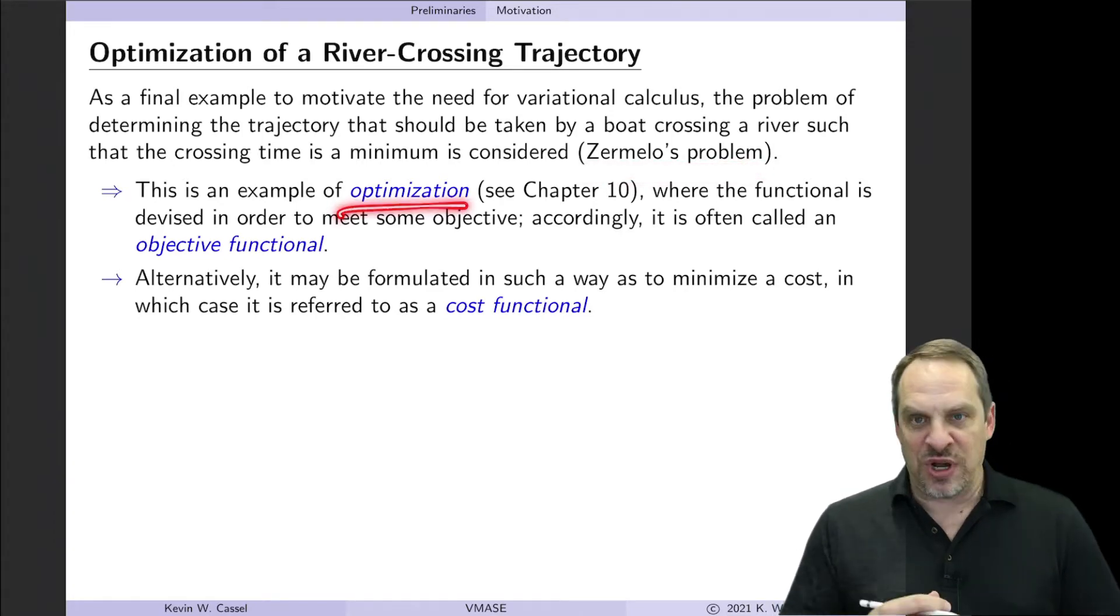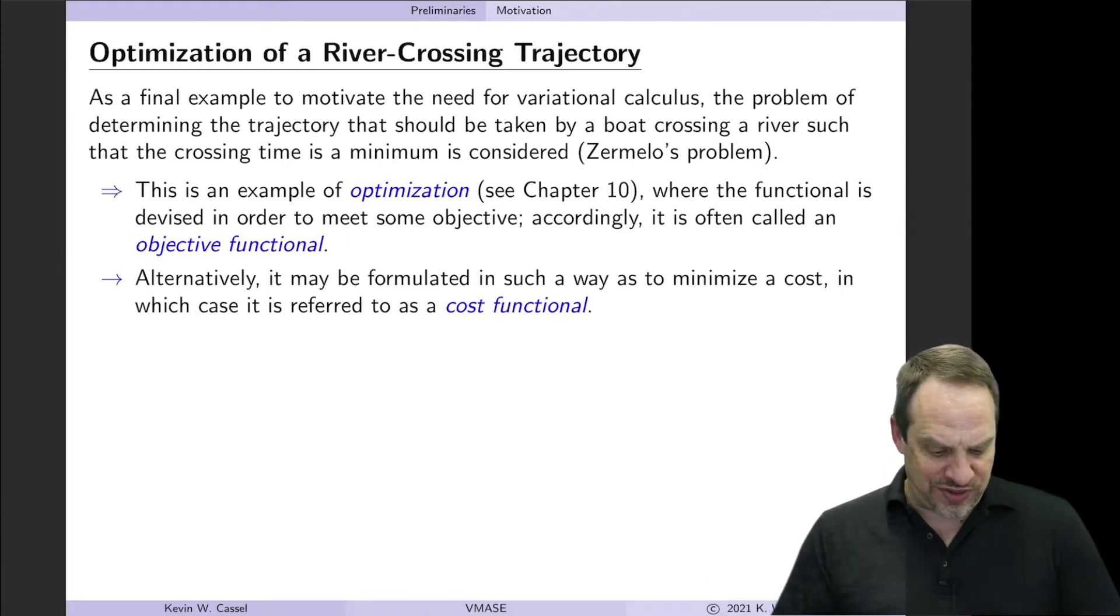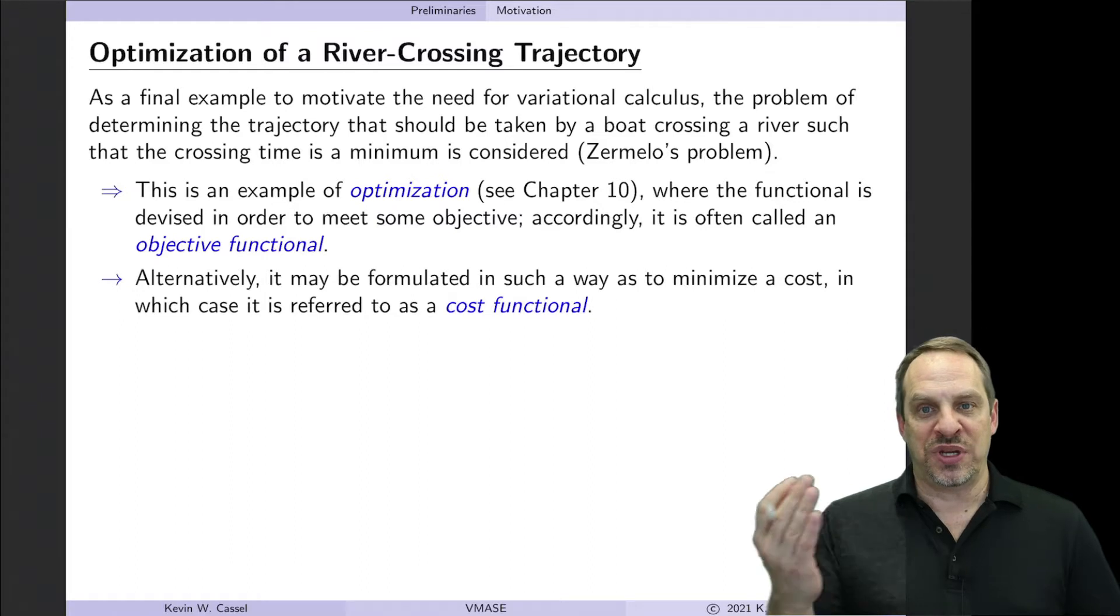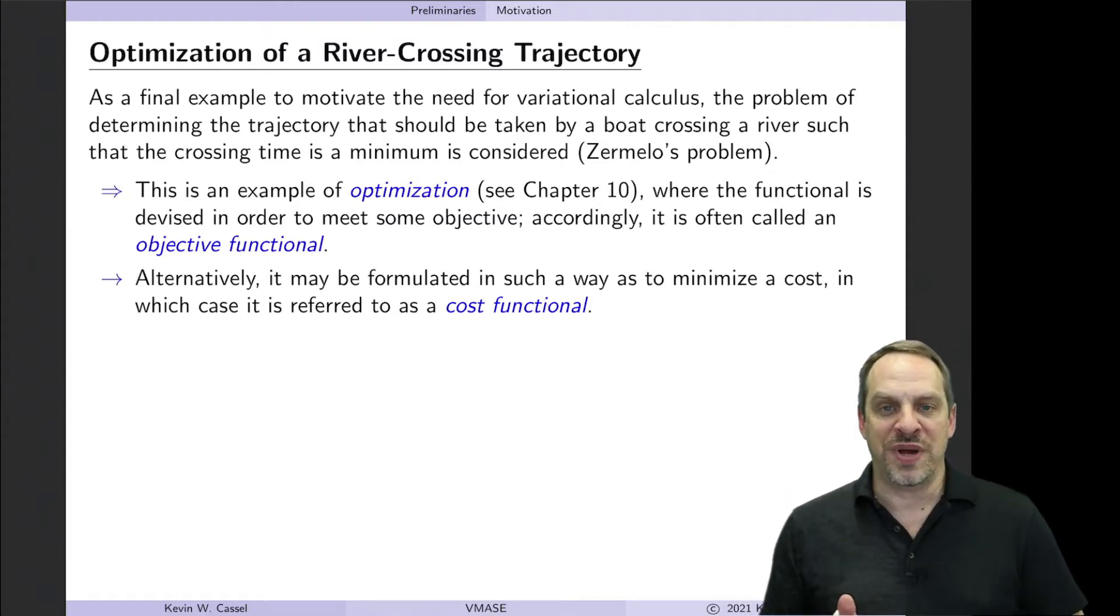So again, this is an optimization problem. It's not based on a physical principle. There's something I want to determine the best way of accomplishing a particular task. So to do so, we'll devise a functional, but we're going to call it an objective functional. It's a functional in the usual sense that we've been discussing, but it defines an objective. And the objective in this case will be to get across the river in the minimum amount of time.